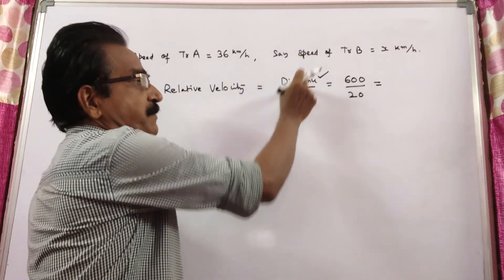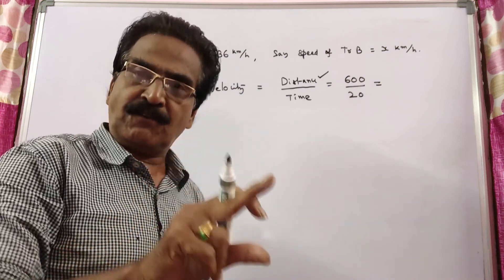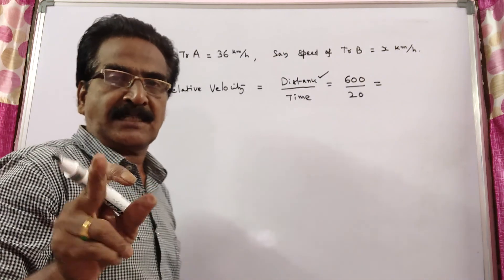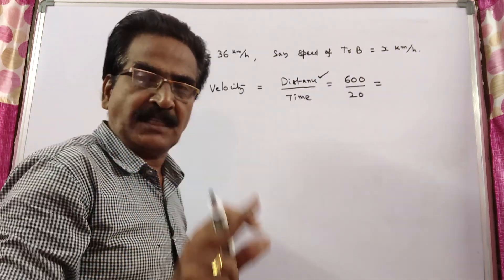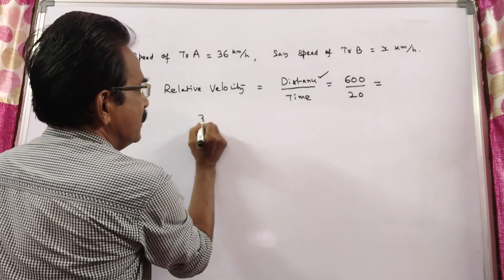So by doing distance divided by time, we get the velocity. Of course, relative velocity. What is relative velocity? These two trains are running in opposite directions, so the relative velocity is the sum of the speeds of the two trains.